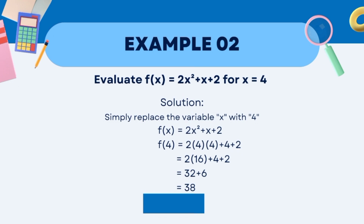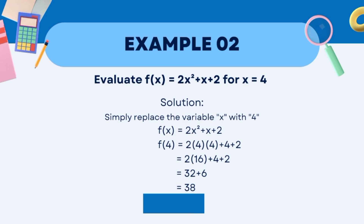Now solve. In this case, prioritize the exponent. 4 raised to the power of 2 equals 4 times 4, which equals 16. 2 times 16 is 32. Then 4 plus 2 equals 6. 32 plus 6 equals 38. Therefore, f(4) = 38.